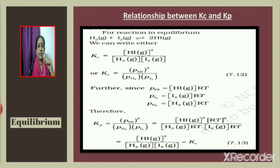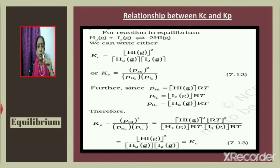Now let us derive the relationship between Kp and Kc. Kc is the equilibrium constant expressed in terms of concentration; Kp is expressed in terms of pressure. For H₂ + I₂ ⇌ 2HI: Kc = [HI]² / [H₂][I₂], and Kp = P(HI)² / P(H₂)·P(I₂). From the ideal gas equation PV = nRT, we get P = (n/V)RT.